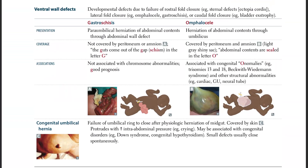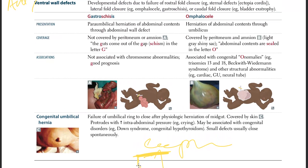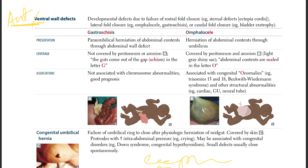Ventral wall defects — ventral means anterior, so these are anterior wall defects. These are developmental defects due to failure of fold closure. You can have a problem at the top portion — cephalic closure — or a caudal defect at the bottom, or lateral wall defects on the sides of the abdomen.